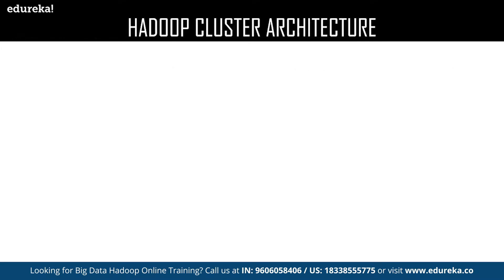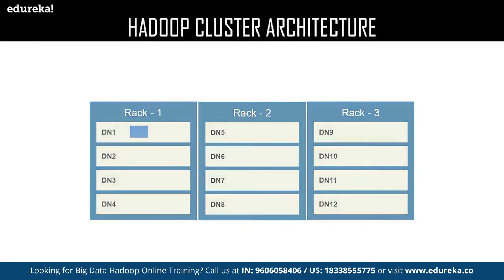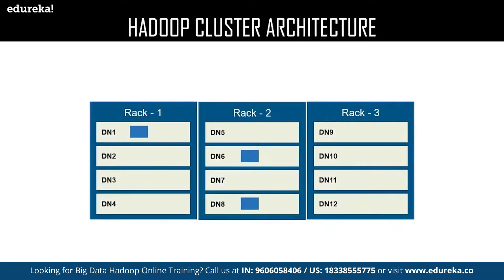Let us look at an example to understand this better. I have a data block on Data Node 1, and Data Node 1 is available on Rack 1, which is the local rack. According to the rack awareness algorithm, the replica of the data block in Data Node 1 can be stored in remote racks — which might be Rack 2 or Rack 3. As you can see, the replica has been stored in the remote rack, which is Rack 2.